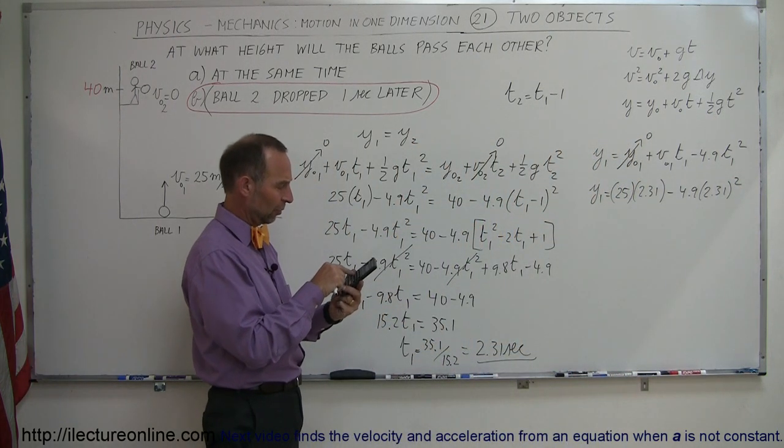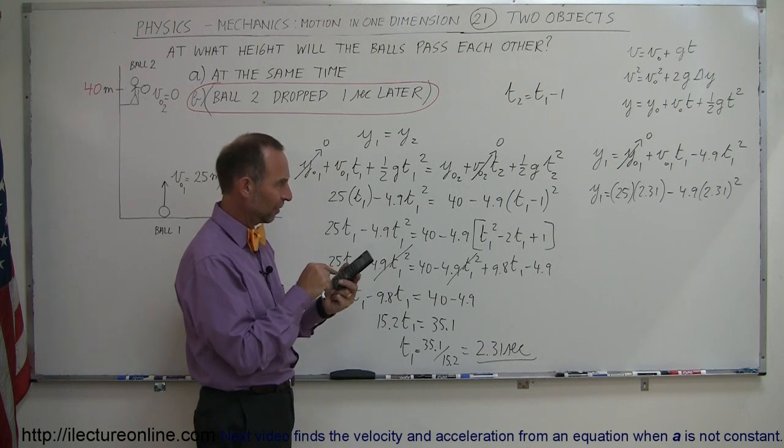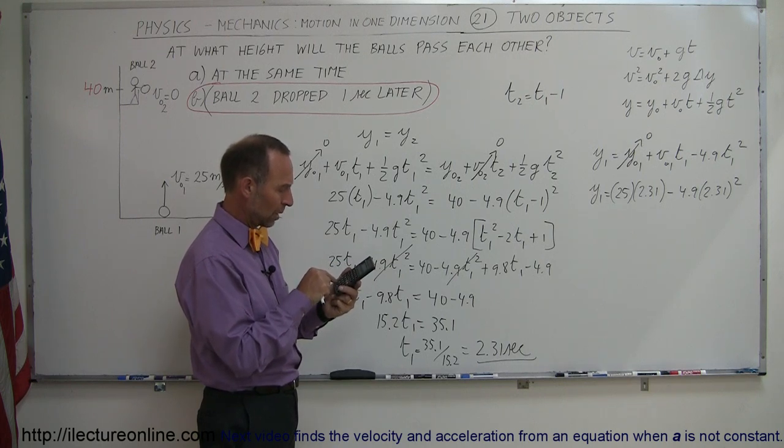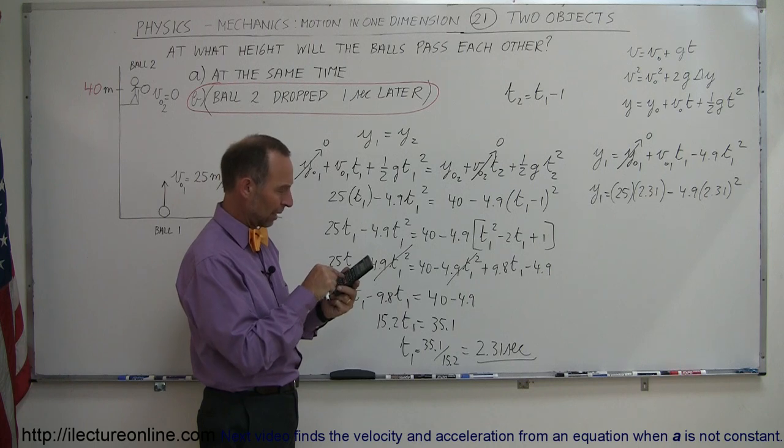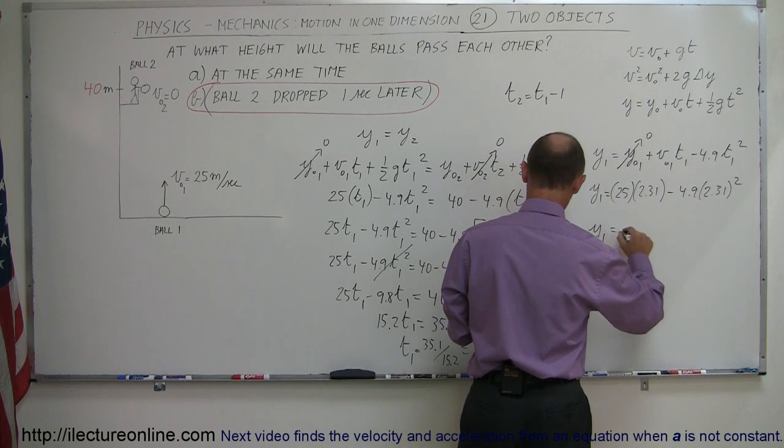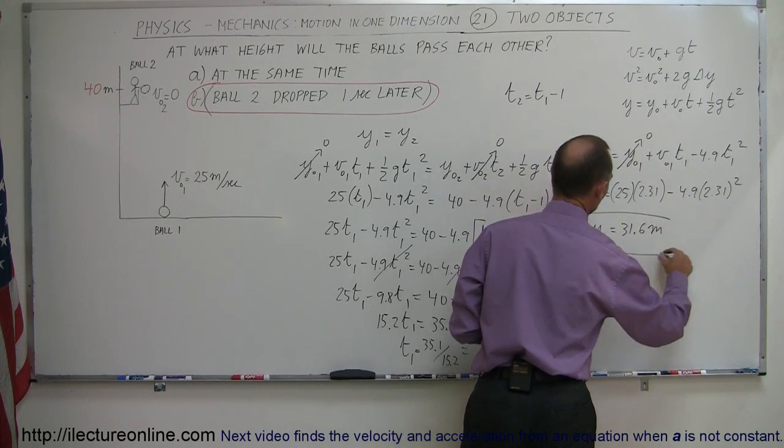So we have square that times 4.9, that's negative, and then plus the quantity 25 times 2.309. So we have y1 equals 31.6 meters above the ground.